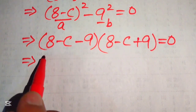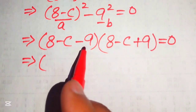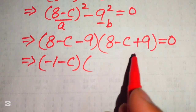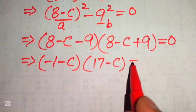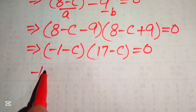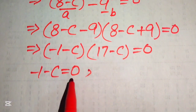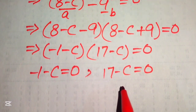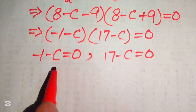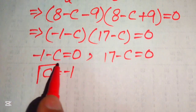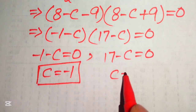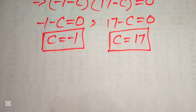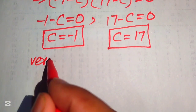Simplifying each factor: 8 minus 9 gives minus 1, so the first factor becomes (minus 1 minus C); and 8 plus 9 gives 17, so the second factor becomes (17 minus C). Setting each factor to zero: from the first case, minus 1 minus C equals 0, giving C equals minus 1; from the second case, 17 minus C equals 0, giving C equals 17. These are the two roots from the second method.